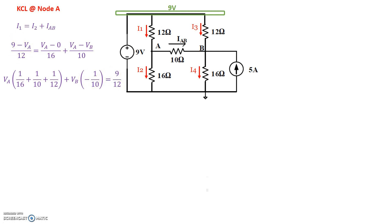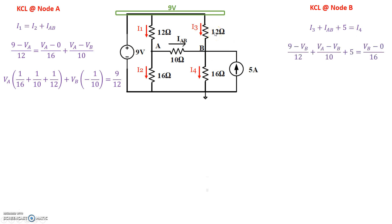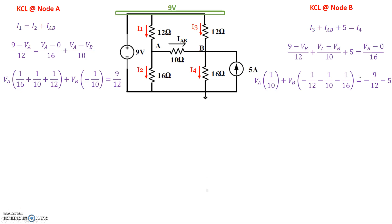Similarly, applying KCL at node B: the currents flowing into node B are IAB, I3, and the 5-amp current source, while I4 flows out. So I3 plus IAB plus 5 equals I4. I3 is (9 minus VB) divided by 12, IAB is (VA minus VB) divided by 10, and I4 is VB divided by 16. After rearranging VA and VB terms just as we did for node A, we end up with the second nodal equation.